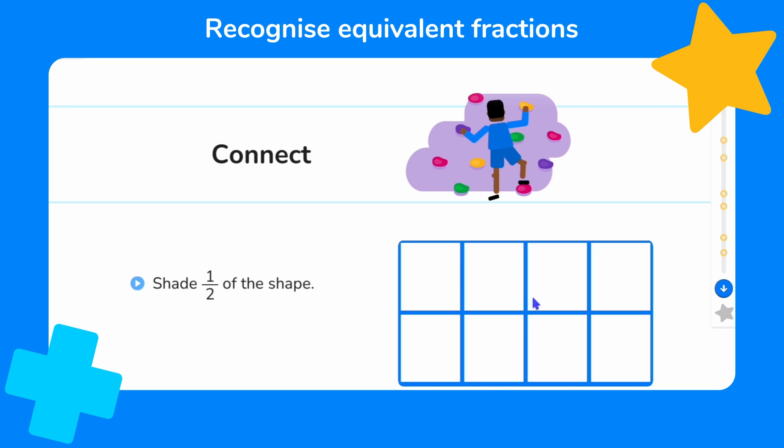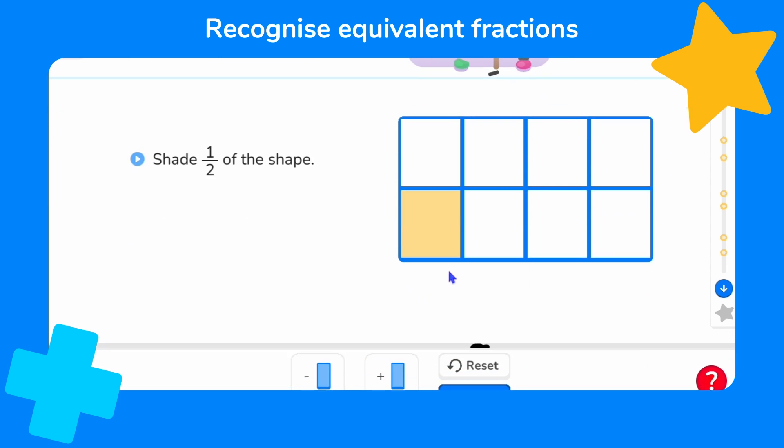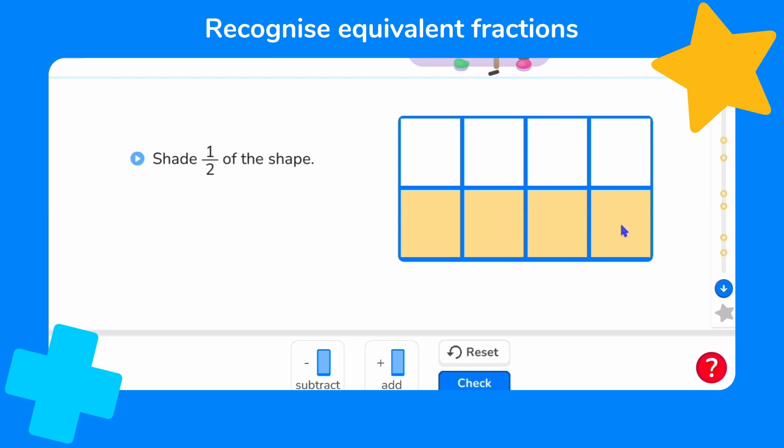Some of you may know that one half of eight is four. That's right, so we need to shade four of the parts. Some of you may be able to see that the whole shape can be divided in half along this horizontal line or along this vertical line. If we shade four parts we can be sure we've shaded half. So I'm going to choose these four parts.